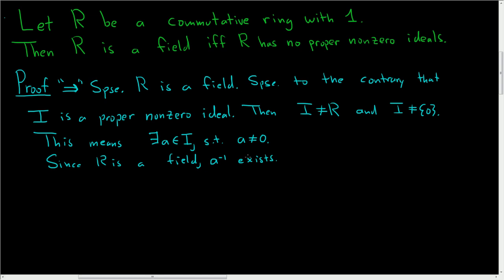And so then, what we can do is write 1 in a clever way. 1 can be written as the inverse of A times A. This is an element in our field R and this is A. So therefore, because I is an ideal, the product also lives in I.